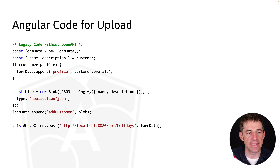The important properties for the Gradle task are: the generator name ('spring' for Java Spring code), the specification file location, the output directory, and additional properties. Key among these is 'interfaceOnly = true' — with this we tell the generator not to provide implementation code, just the interface with correct request mappings and types. The implementation is our job. We also set the API and model packages, plus additional properties like useSpringBoot3 and bean validation support.